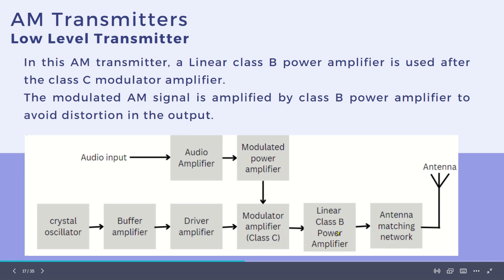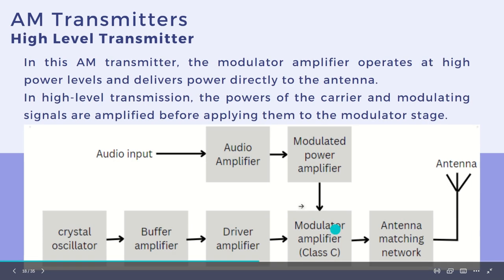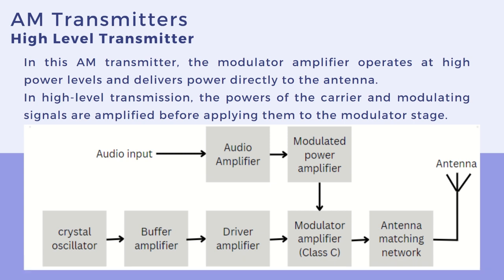Next is the high-level AM transmitter. In this transmitter, the modulator amplifier operates at higher power levels and delivers power directly to the antenna. In high-level transmission, the powers of the carrier and modulating signals are amplified before applying them to the modulator stage.